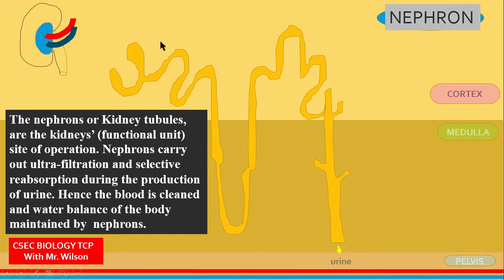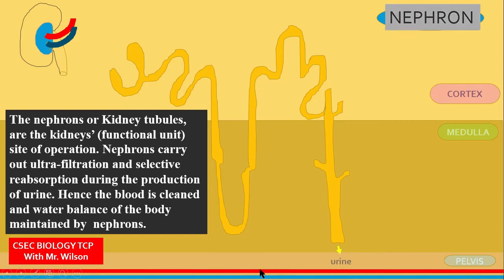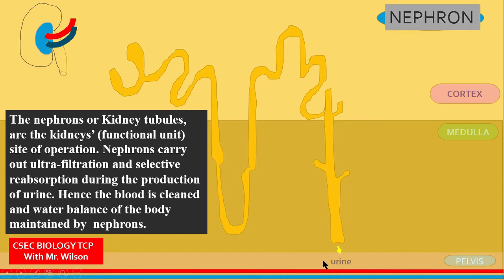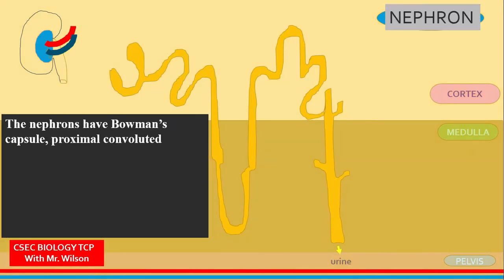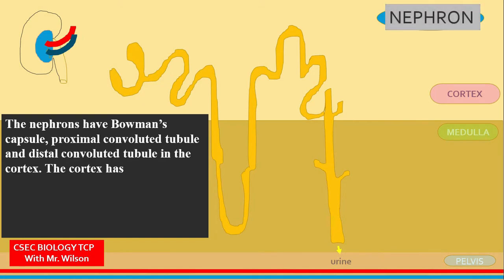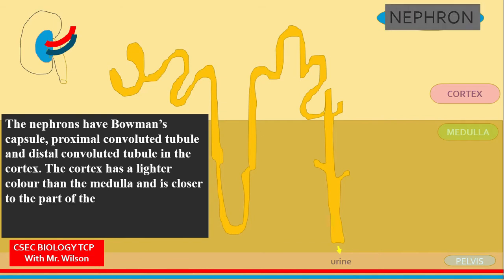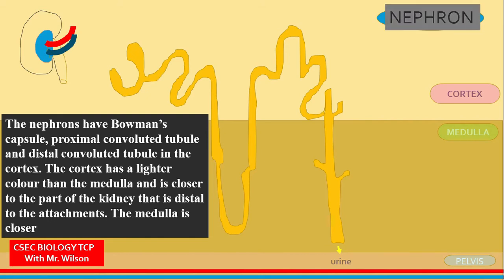Here we have a diagram of the kidney viewed from the back. At the bottom of the screen you can see the red line representing the renal artery, the blue line representing the renal vein, and the pelvis, which is an enlarged portion of the ureter. The cortex has a lighter color than the medulla and is closer to the outer part of the kidney, while the medulla is closer to the attachment.